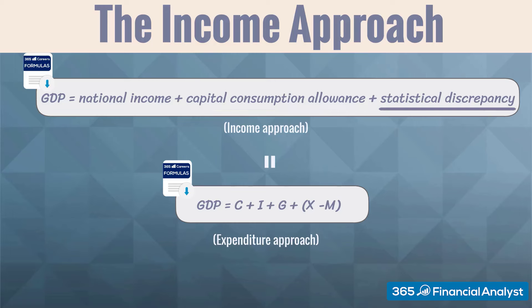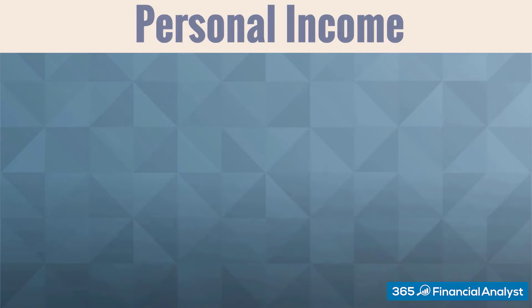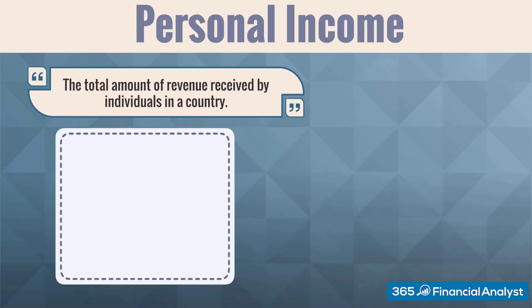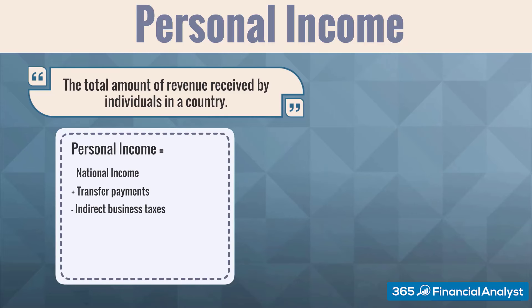We have discussed how the GDP, or aggregate output, and the national, or aggregate income, relate. It is time to introduce a measure that is a little bit more specific — personal income. Personal income is all the income received by households in a given country. It is the total amount of revenue received by individuals, not the government or businesses. It equals national income plus transfer payments minus indirect business taxes minus corporate income taxes minus undistributed corporate profits.